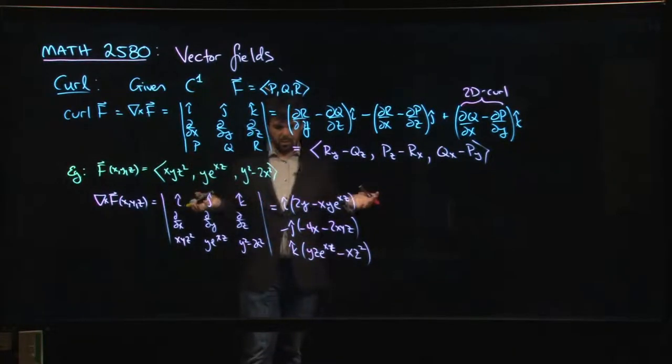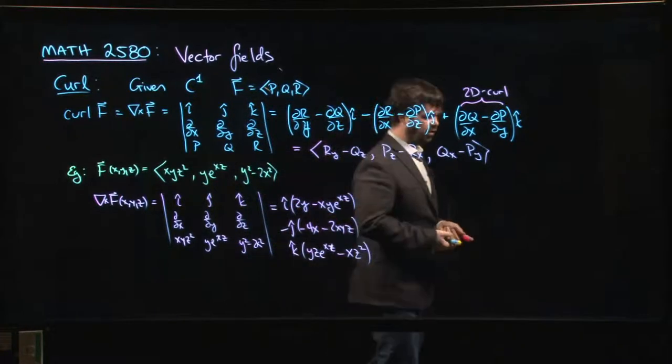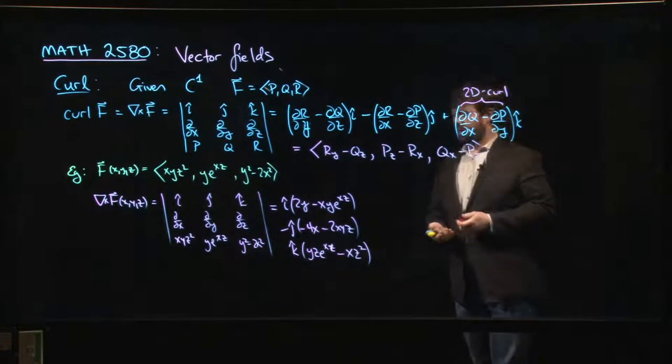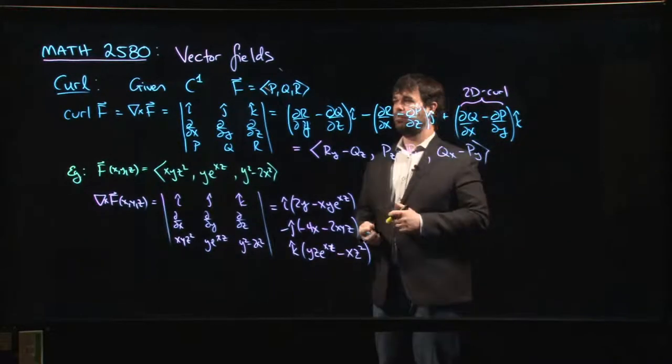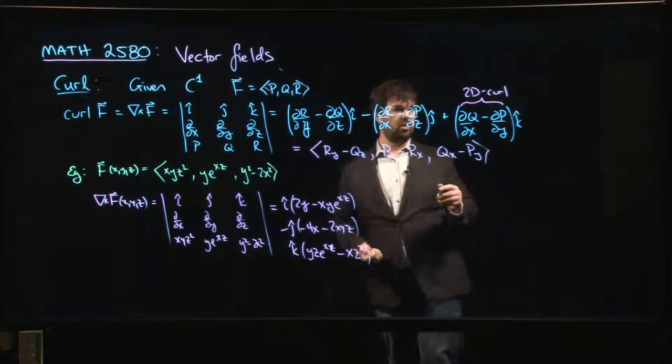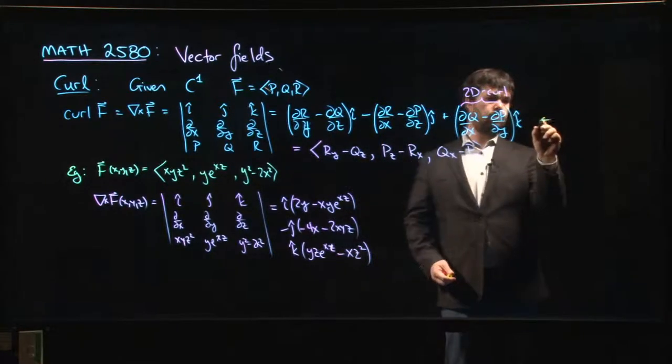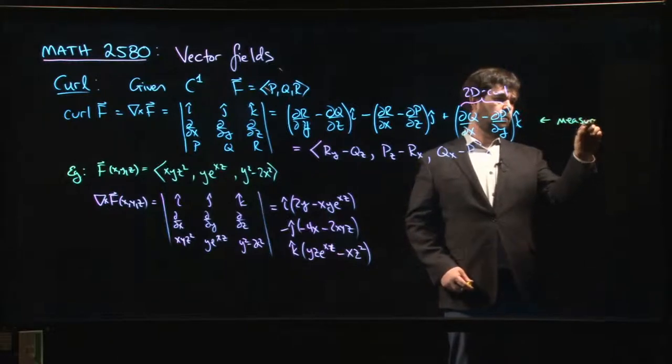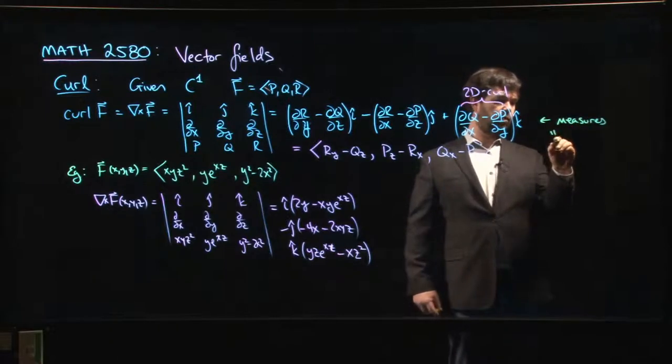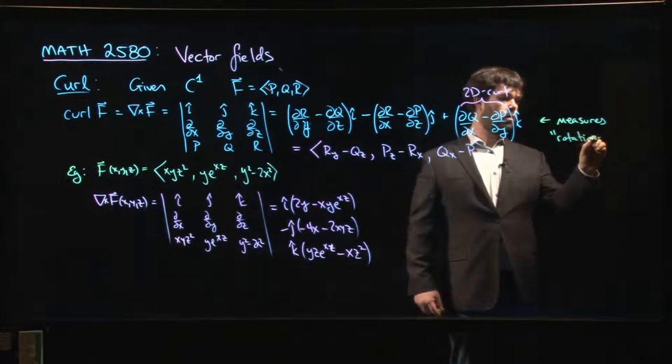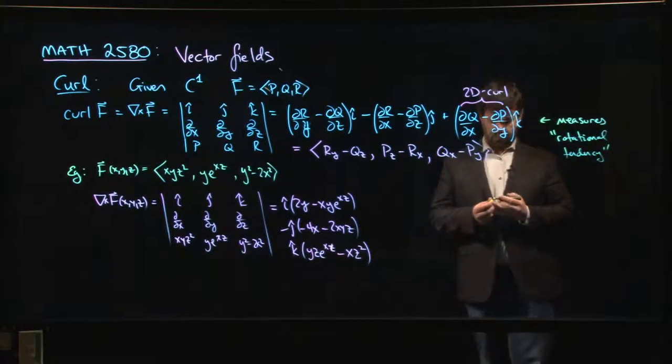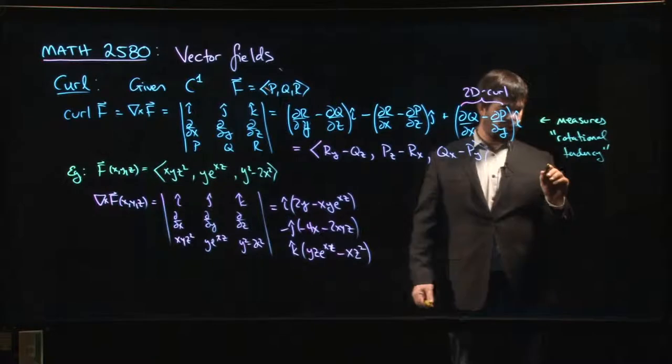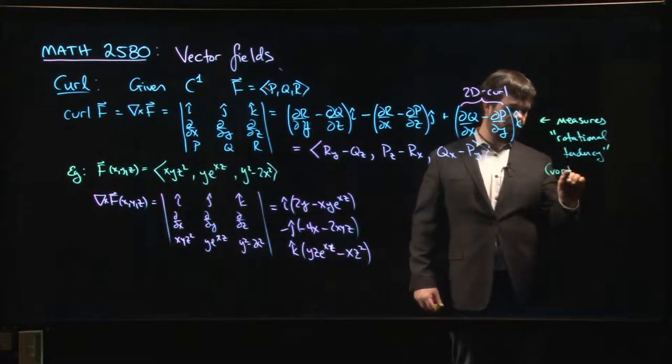Okay, and so you get this vector, which is fine. We can compute it. It might leave you wondering what exactly you've computed by doing this. So what exactly is this curl measuring, right? So what this measures is it measures a sort of rotational tendency for your vector field. Some people might refer to this as sort of like it's a vorticity, if you like.